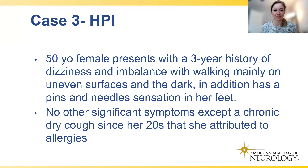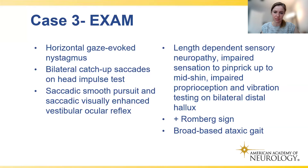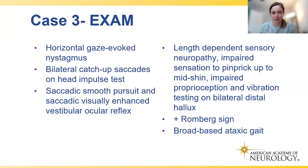Case 3 is a 50-year-old female with a three-year history of dizziness and imbalance, worse on uneven surfaces and in the dark. She has pins-and-needles sensation in her feet and a chronic cough since her 20s that she attributed to allergies. On exam: horizontal gaze-evoked nystagmus, bilateral catch-up saccades on head impulse test, saccadic smooth pursuit, saccadic visually enhanced vestibulo-ocular reflex, length-dependent sensory neuropathy with impaired sensation to pinprick up to mid-shin, impaired proprioception and vibration testing at bilateral distal lower extremities, positive Romberg sign, and broad-based ataxic gait.